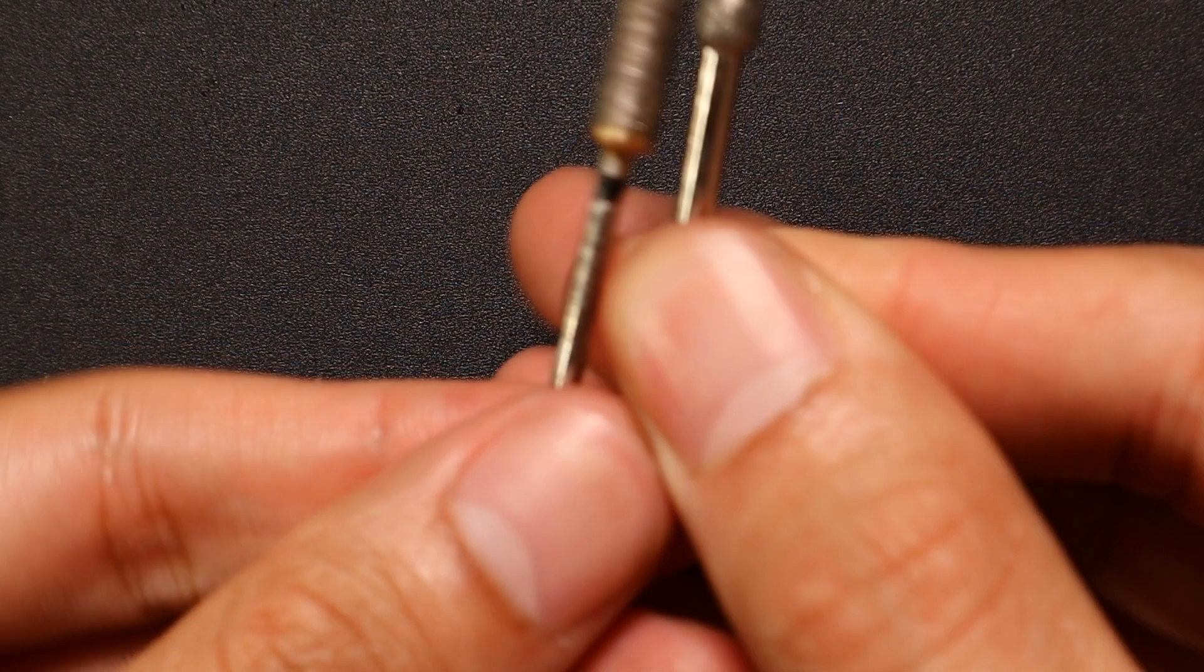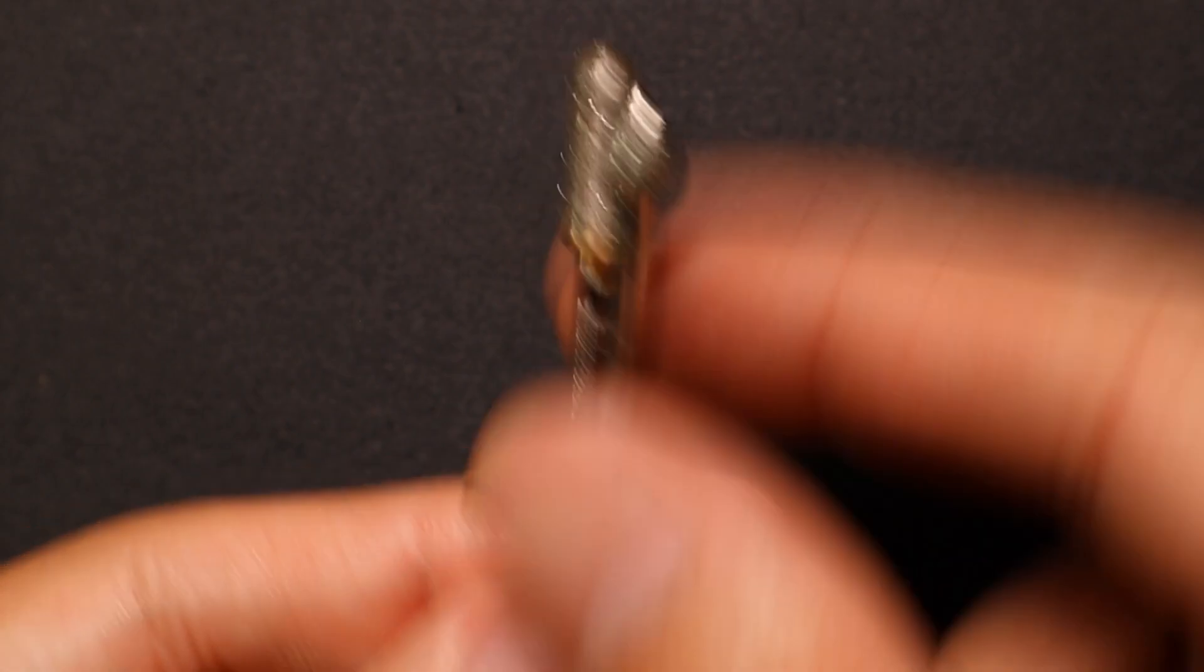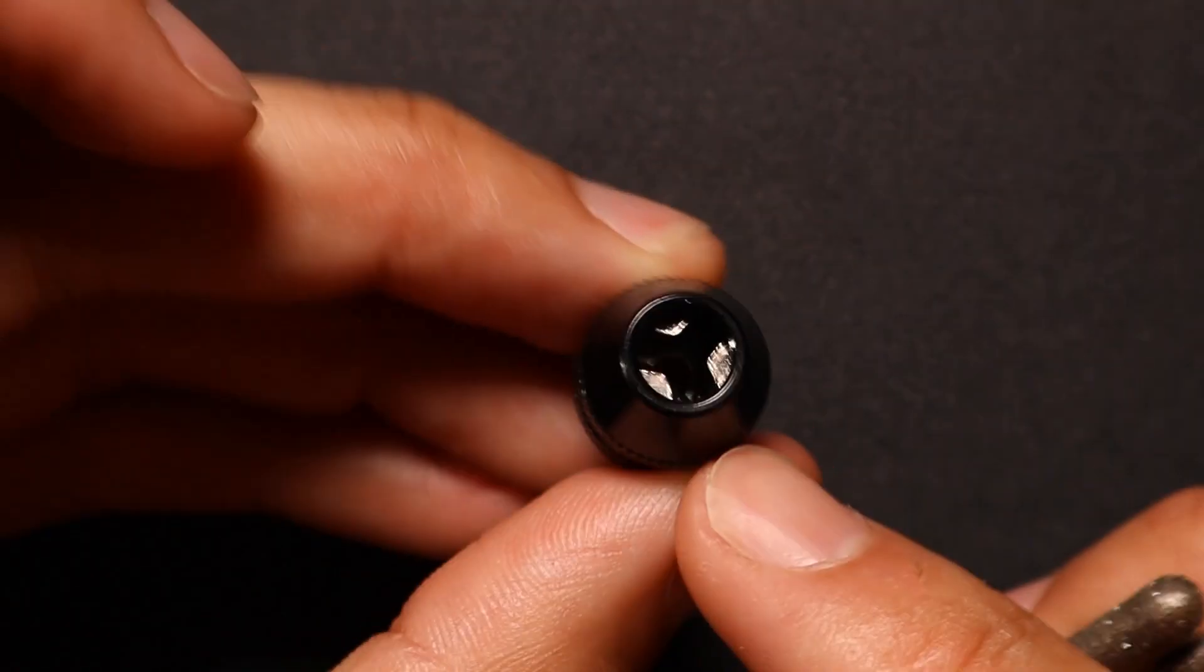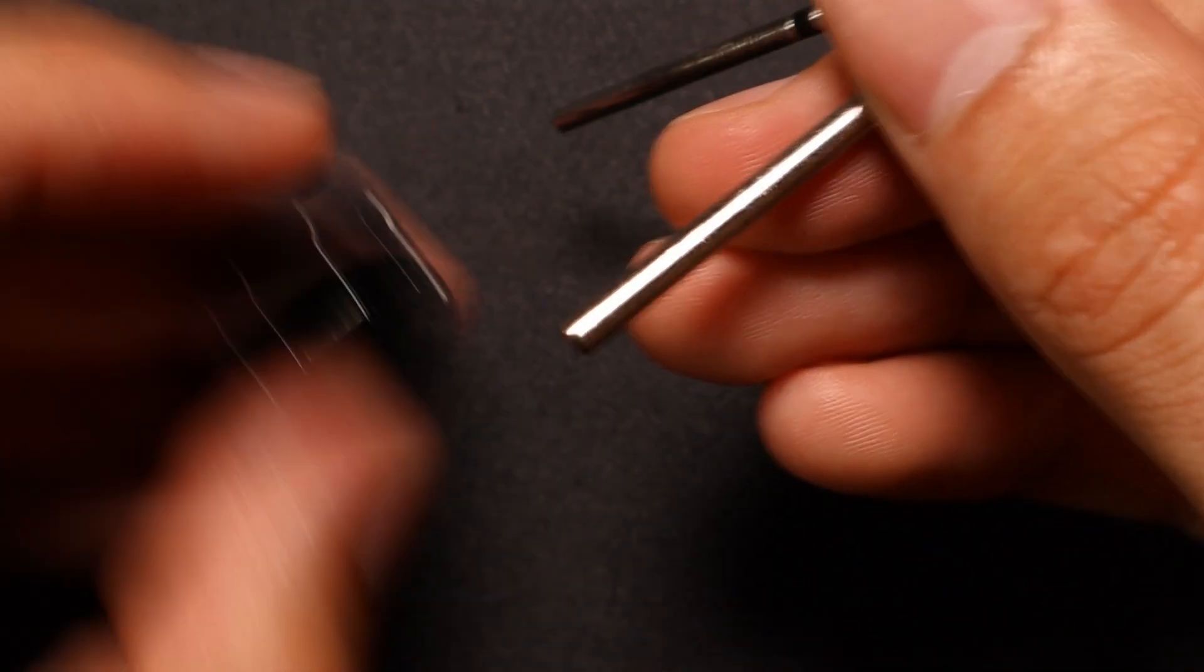This adjustable chuck, because it adjusts from this range all the way down to fully closed, will fit both of these in there, no worries. If you're going to use what comes with the tool, that's these collets.